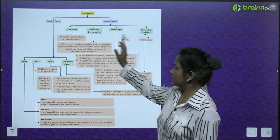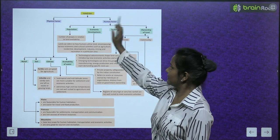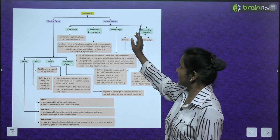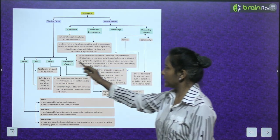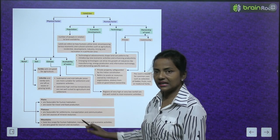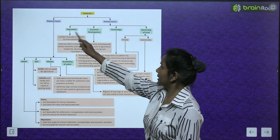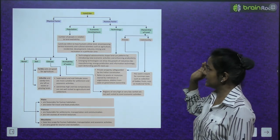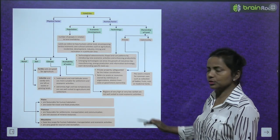Here is a flow chart showing land use. Land use is divided into two parts: physical factors and human factors. Physical factors further divide into relief, soil, climate, and availability of water — with many sub-heads under each. Human factors include population, economic development, technology, and ownership of land, which are further divided. Just go through this chart carefully.